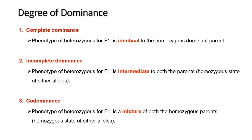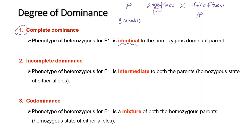Degree of dominance. In complete dominance, the phenotype of heterozygous F1 is identical to the homozygous dominant parent. This is what we would usually see in simple Mendelian genetics. For example, crossing a homozygous dominant purple-flowered pea plant with a homozygous recessive white-flowered plant gives heterozygous F1 offspring that produce purple flowers — this is complete dominance.